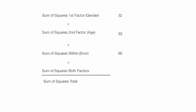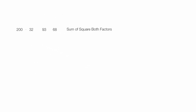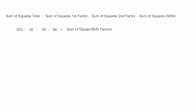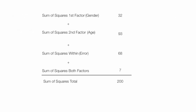Since I know all the sum of squares except sum of squares of both factors, I can use algebra to calculate it: 200 minus 32 minus 93 minus 68 equals the sum of squares of both factors. That is, total sum of squares minus SS first factor minus SS second factor minus SS within equals SS interaction. This turns out to be 7. So all sum of squares — first factor, second factor, within, and both factors — total to 200.